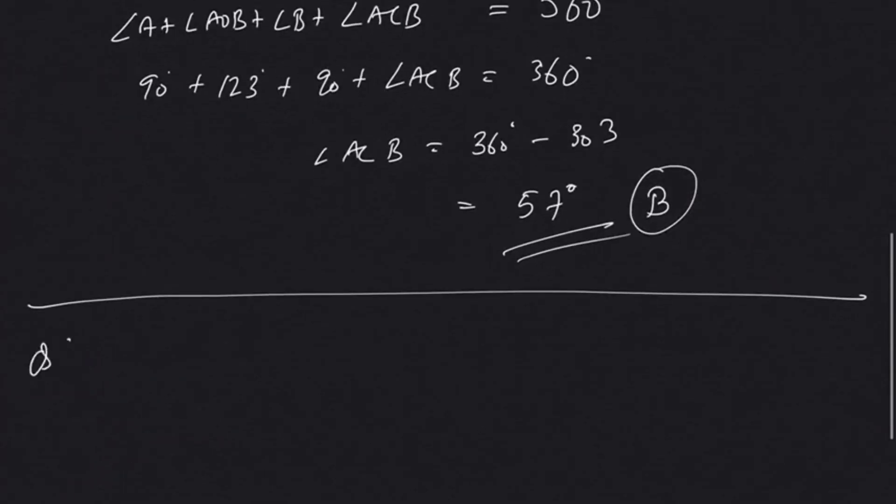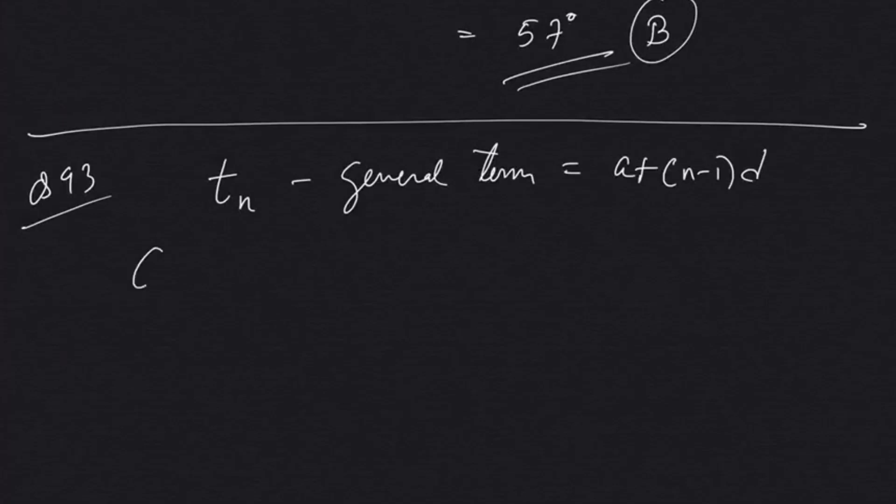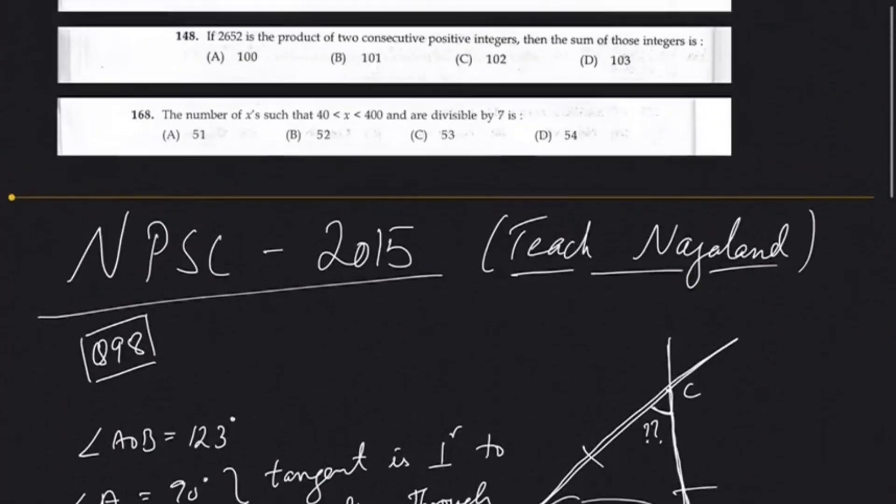Question number 93. The nth term t_n represents the general term. So the general term of an AP is a + (n-1)d, where d represents the common difference. For us, given that the difference of the 50th term and the 20th term is 15.